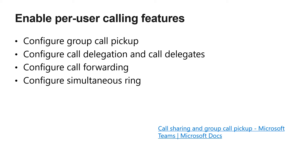The next segment deals with enabling per-user calling features — policies you'll create in the Teams admin center and assign to users either through the UI or using PowerShell. The only way to pass these types of questions is to practice repeatedly to get familiar with the interface. Go into your Teams admin center and configure group call pickup, configure call delegation, configure call forwarding, and configure simultaneous ring. If you don't know what any of these features are, a link is included so you can read more about them before practicing in the admin center.